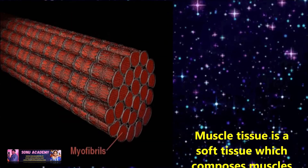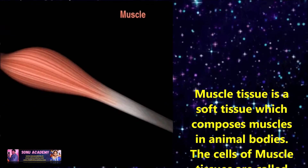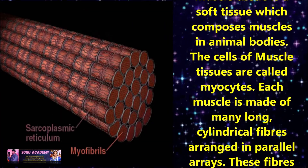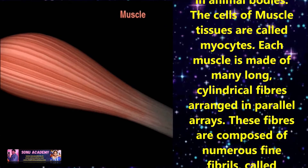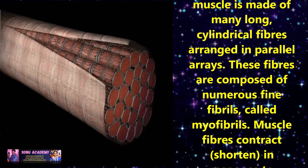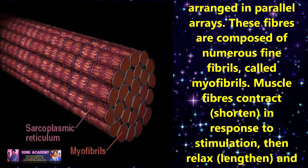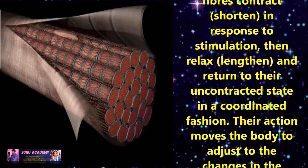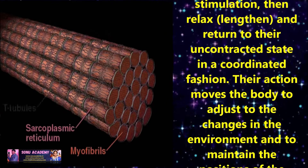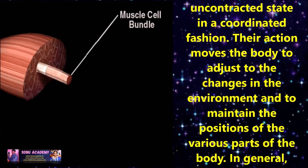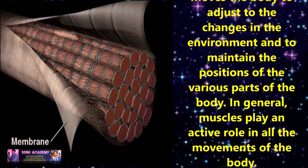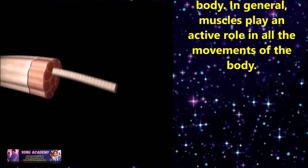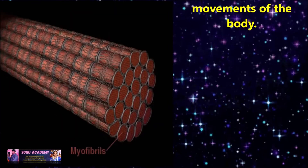Muscle tissue is a soft tissue that comprises muscles in animal bodies. The cells of muscle tissues are called myocytes. Each muscle is made up of many long cylindrical fibers arranged in parallel arrays. These fibers are composed of numerous fine fibrils called myofibrils. Muscle fibrils contract in response to stimulation, then relax and return to their uncontracted state in a coordinated fashion. This action moves the body to adjust to changes in the environment and to maintain the positions of various parts of the body. In general, muscles play an active role in all the movements of the body.